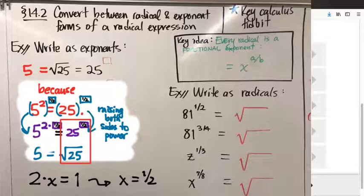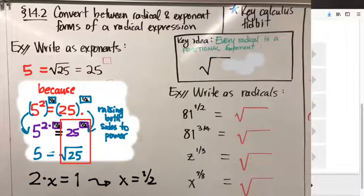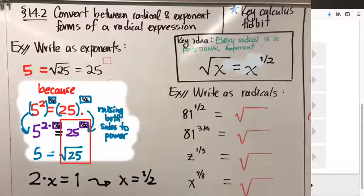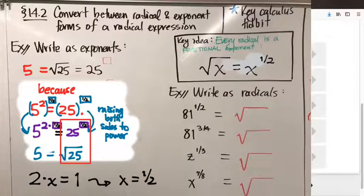Taking the square root of a quantity — any quantity, not just 25 — is the same thing as raising that thing to the power 1 half. That's probably the most important version of this takeaway for when you go to calculus, because there are a lot of calculus problems involving square roots. Before you can do anything calculus-y with them, you'll convert those square roots into exponents of 1 half. It's the most common radical-to-fractional-exponent conversion in all of analysis.